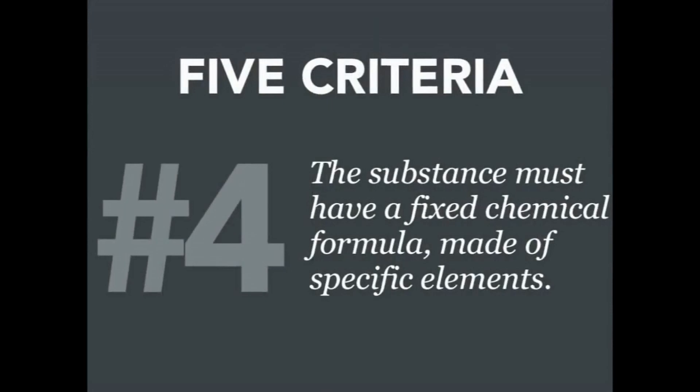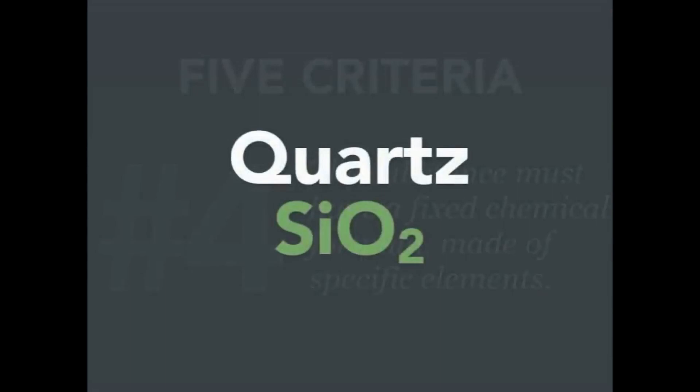Number four, the substance must have a fixed chemical formula, meaning it's made up of a specific combination of elements. Let me give you an example. The mineral quartz is composed of silicon and oxygen bonded together, specifically one silicon bonded to two oxygen atoms. All quartz is made of this chemical formula.